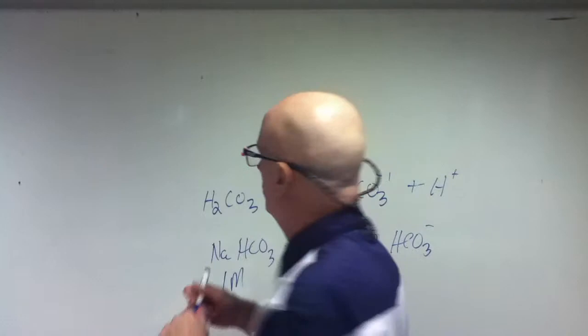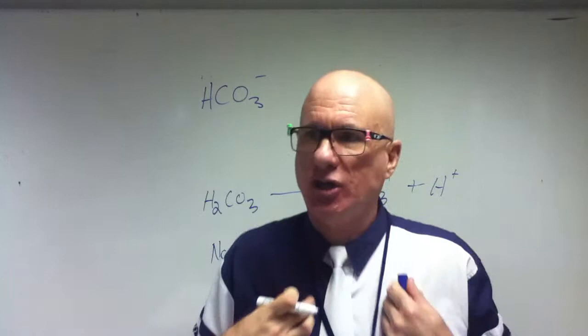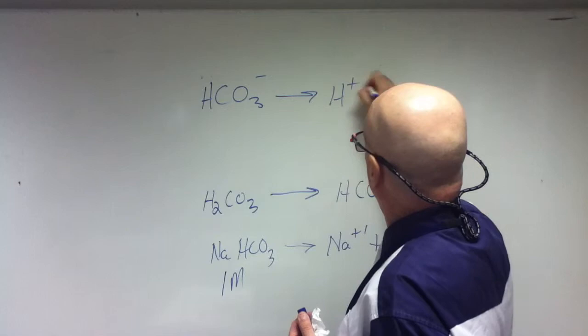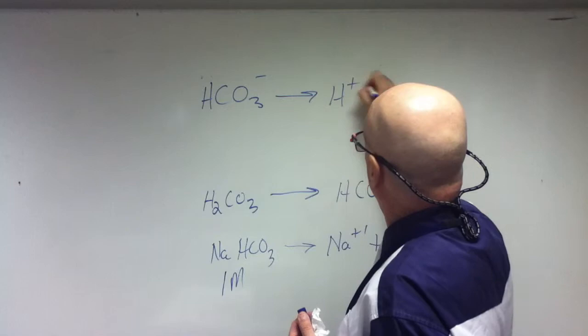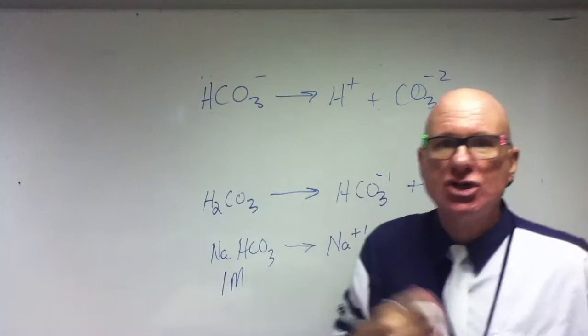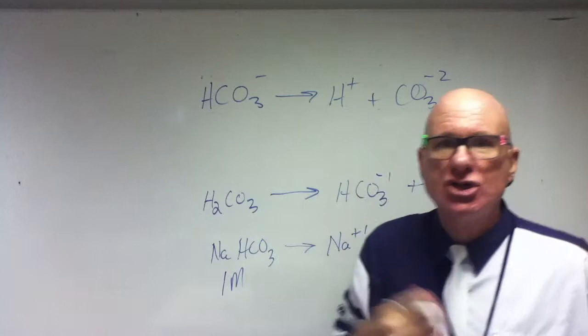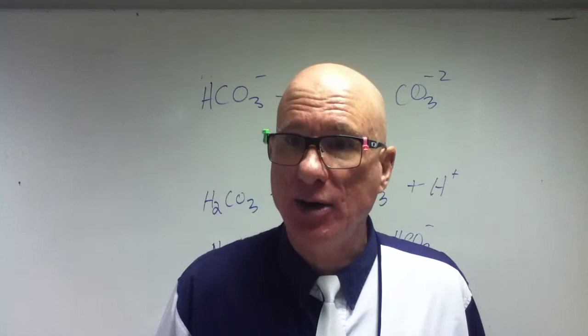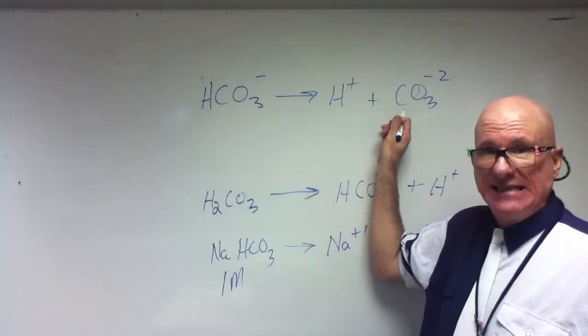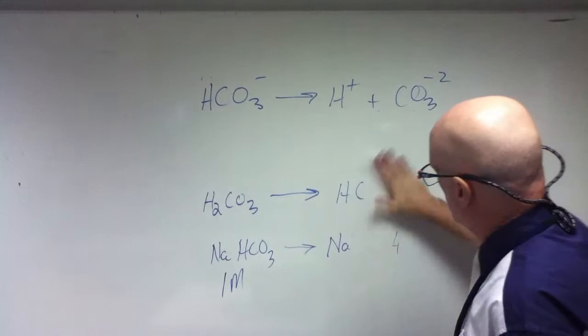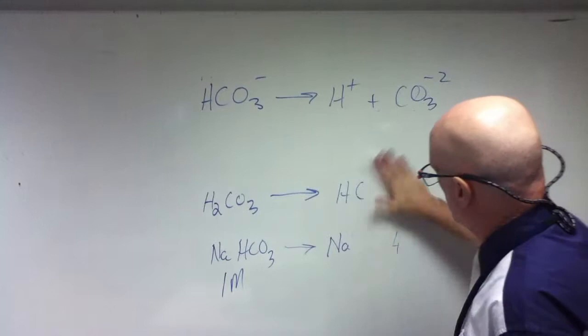HCO₃⁻, negative one charge, bicarbonate — I'm telling you it's going to act like an acid. What's it got to do? It's got to give up one proton — give up the proton in the form of hydronium, and it's going to produce CO₃²⁻. Now, if I put that in water, pure sodium carbonate in water, it's going to accept — it's going to be a stronger acceptor. So that's going to act like a base. That's why that's the conjugate base. That's the acid; that's the conjugate base.